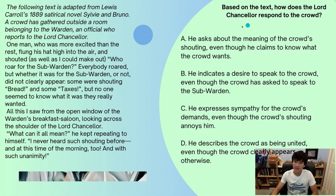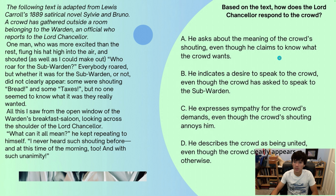This question is asking us specifically about the Lord Chancellor and how he responds. He's obviously repeating to himself, 'I never heard such shouting before, and with such unanimity.' Let's look at the answer choices. Answer A: He asks about the meaning of the crowd's shouting, even though he claims to know what the crowd wants. Well, he doesn't claim to know what the crowd wants — that's never said here.